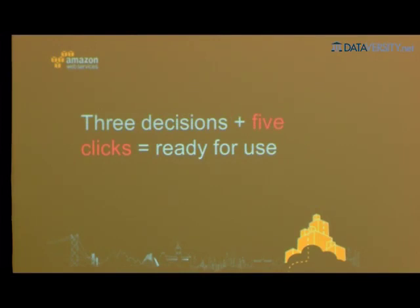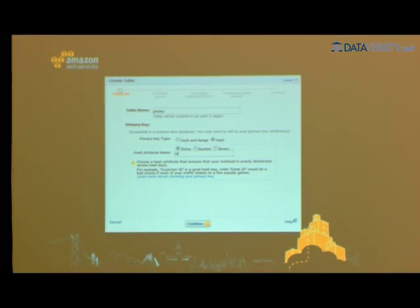The three decisions and five clicks, and you're ready to use. You create a table — for example, a photos table — and then decide on the hash key or hash and range key. Here we'll create a hash key, call it type string — you can do number and binary as well — and name the hash attribute ID.